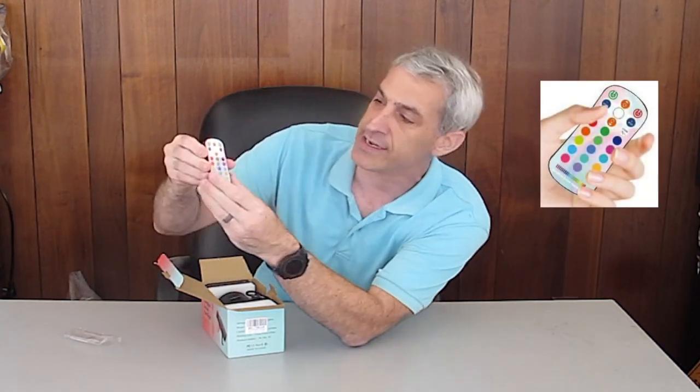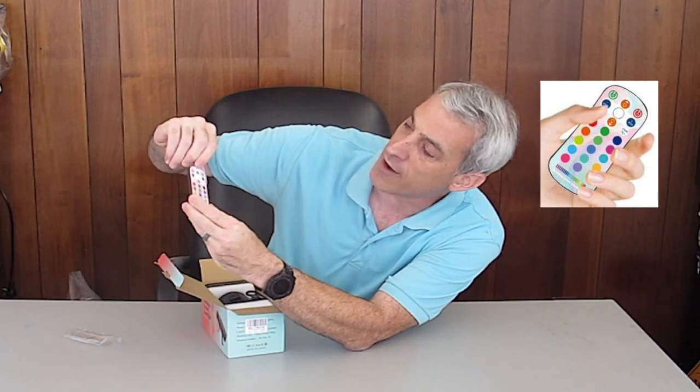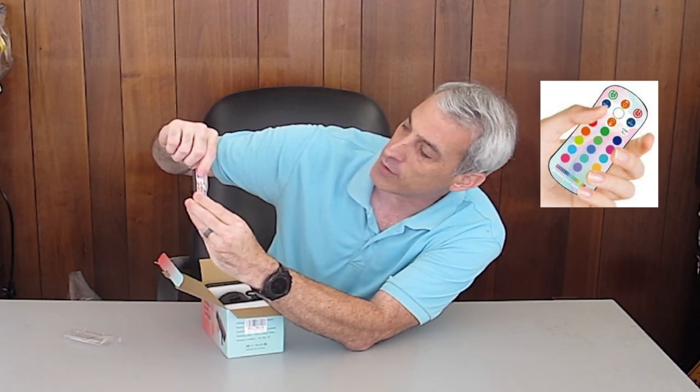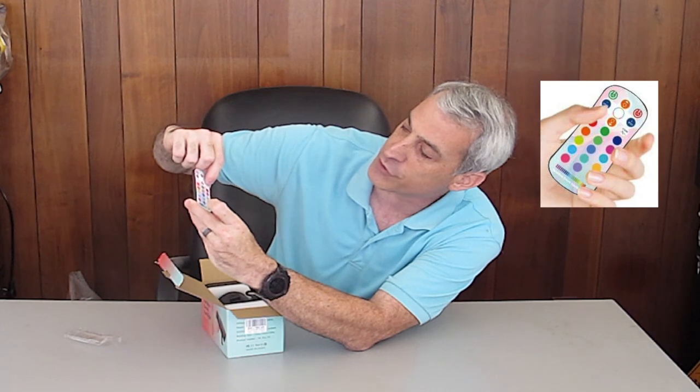So the first thing I see is the remote control. It actually lets you choose all the different colors right here. There's power on and off, brightness on and off, speed control, and then you have your breathe and your strobe.